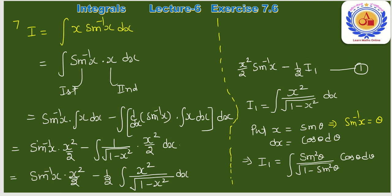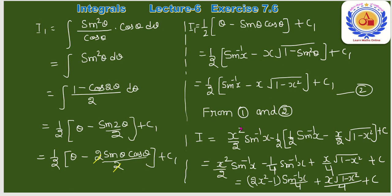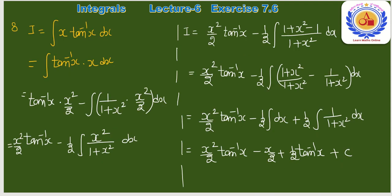Final answer after combining equations (1) and (2): x²/2·sin⁻¹(x) − (1/4)·sin⁻¹(x) + x/4·√(1−x²) + C। Simplify करके: (sin⁻¹(x)/4)·(2x²−1) + x·√(1−x²)/4 + C।